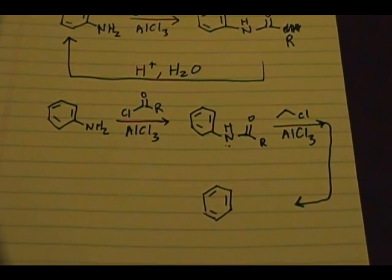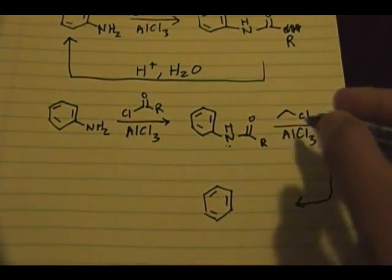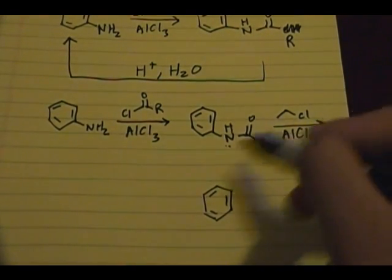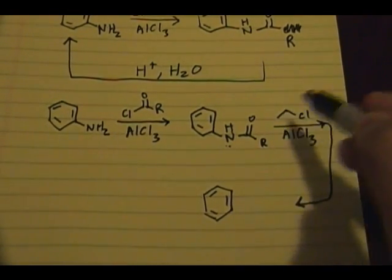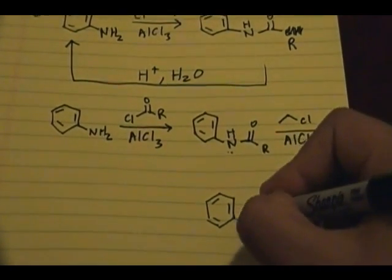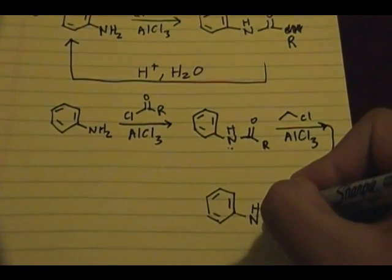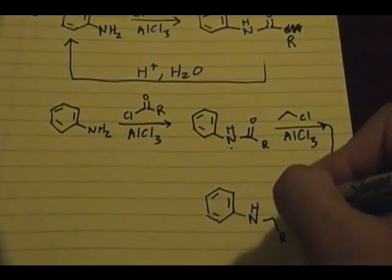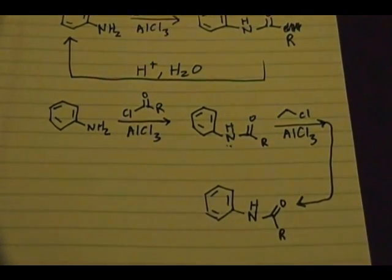Alright, welcome back everybody. Continuing this example I was showing, if you want to add or substitute a hydrogen for this two carbon ethyl chain, what will happen is you have your NH, you still have your acyl group attached to the nitrogen.